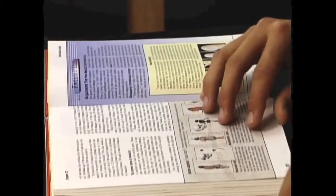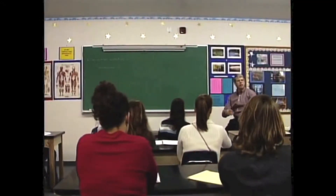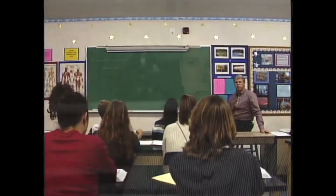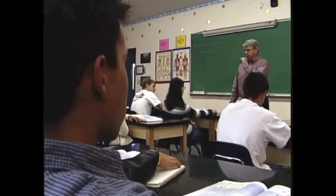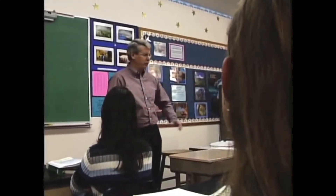Most biology textbooks, however, supply little information about the Cambrian explosion, if they even mention it at all. My textbook gives a one-sentence statement — just that there was this Cambrian explosion — but then goes on to give a traditional Darwinian account of a slow, gradual evolving process.